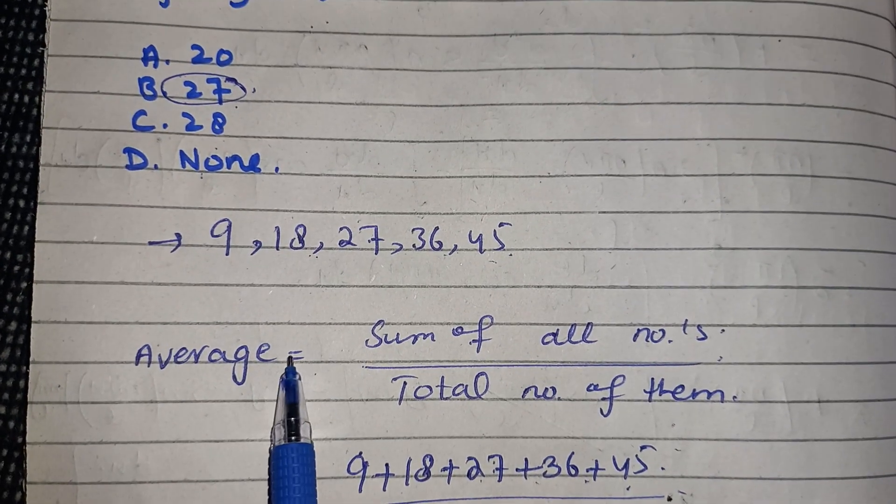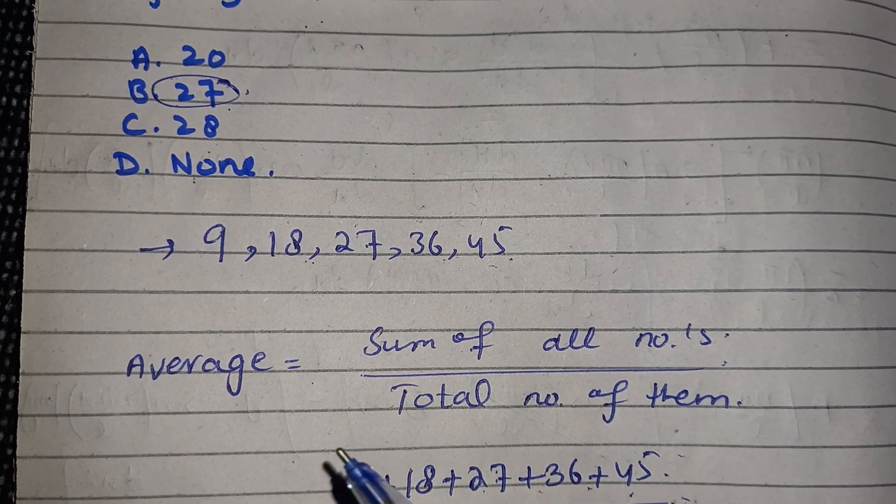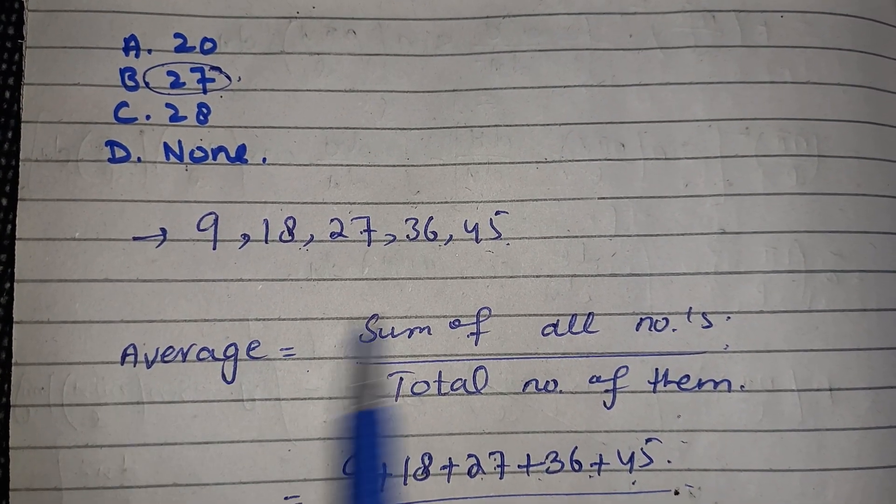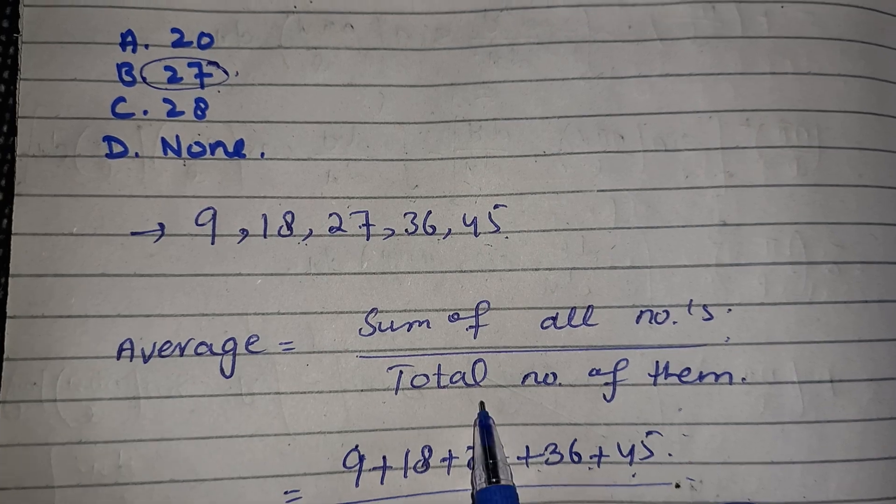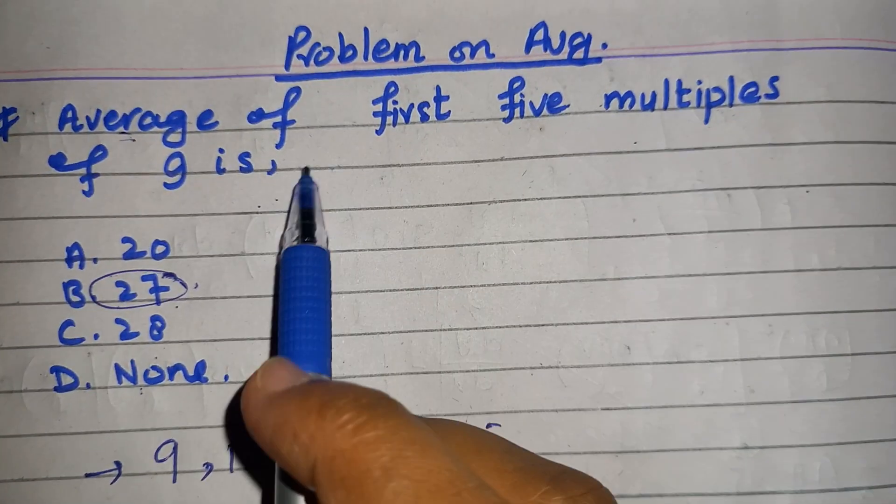Average is actually when you are given numbers and you are asked to find its average, then you just have to add all of the numbers and divide by total number of them.